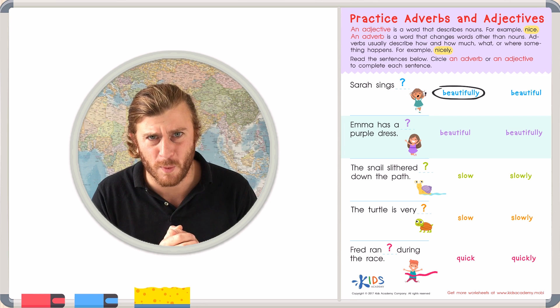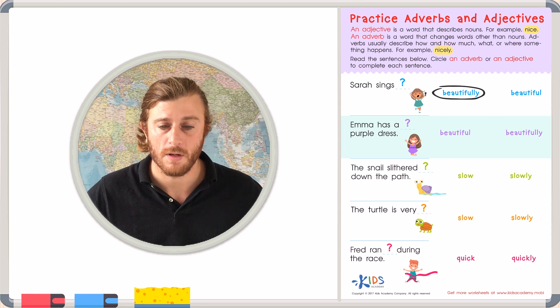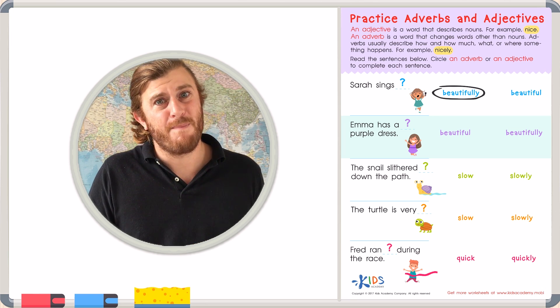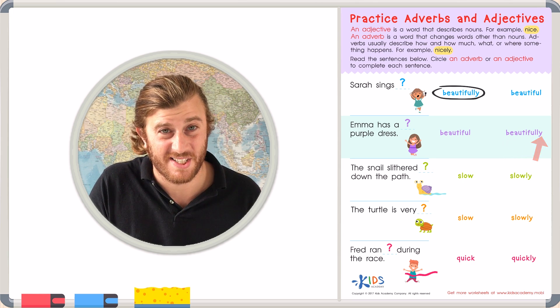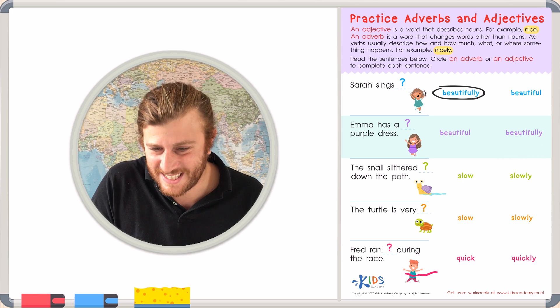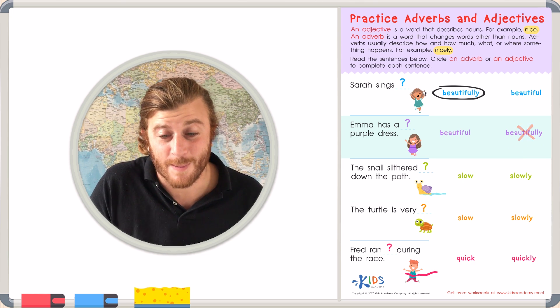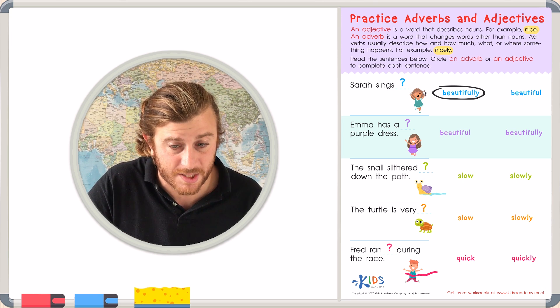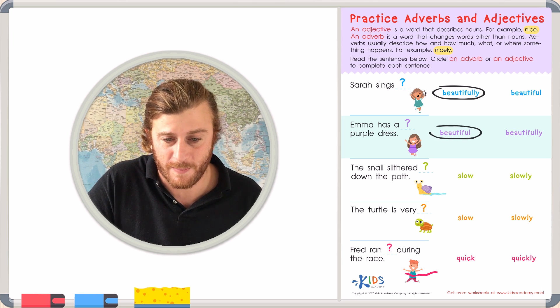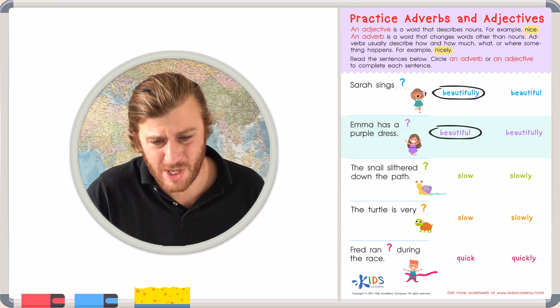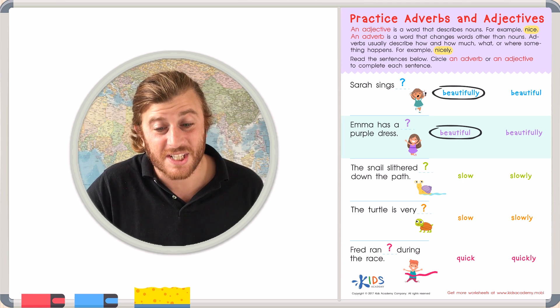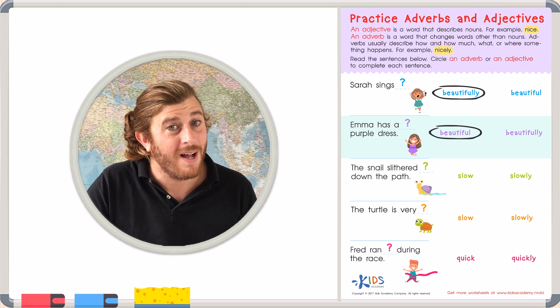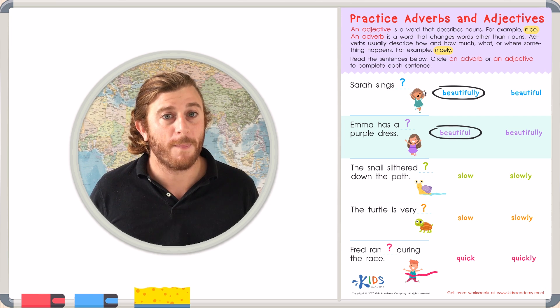But of course, to be careful, we have to try both. Emma has a beautifully purple dress. That doesn't sound right. And that's an adverb. In this case, we need the adjective that describes the dress. We have beautiful. Purple is also describing the dress. So, that's an adjective too. Emma has a beautiful purple dress.